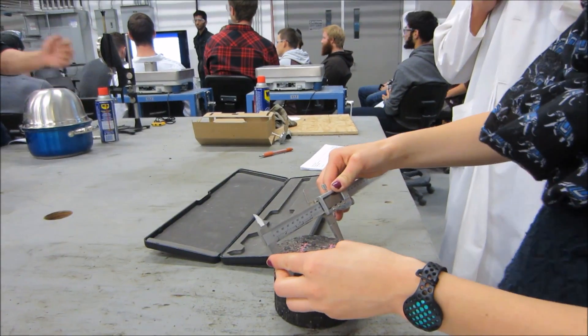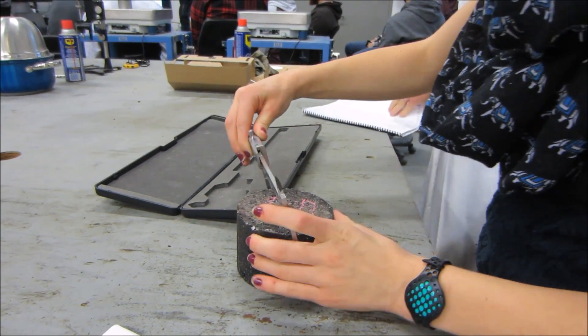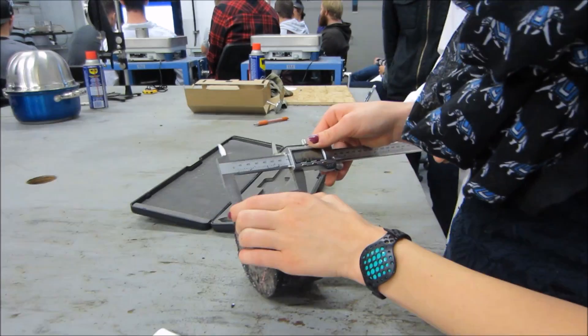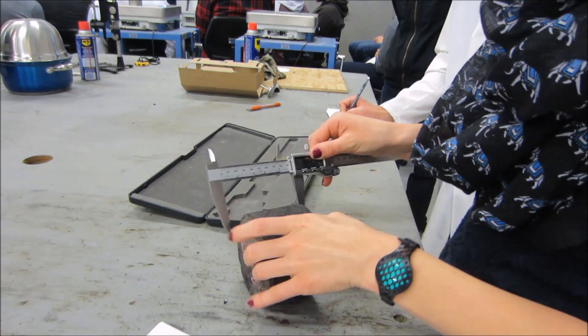First begin by taking the diameter measurement of your mortar puck using the Vernet caliper. Next take 4 height measurements of your mortar puck and take the average of these for your calculations later on.